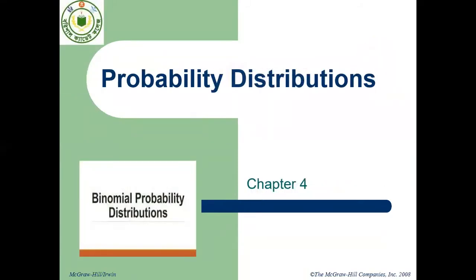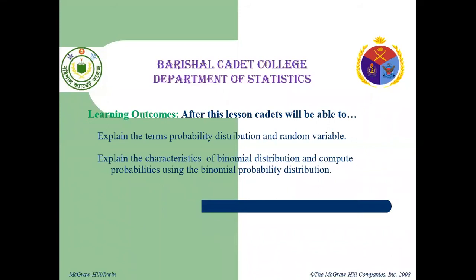Today I have designed my class on the topic Binomial Distribution, Chapter 4. Learning outcomes: after this lesson, cadets will be able to explain the terms of probability distribution and random variable, explain the characteristics of binomial distribution, and compute probabilities using the binomial distribution.